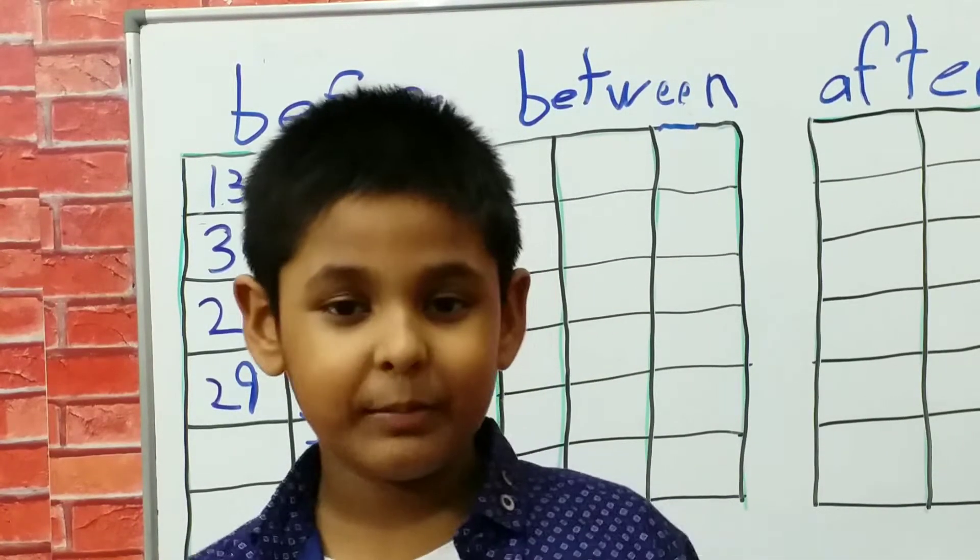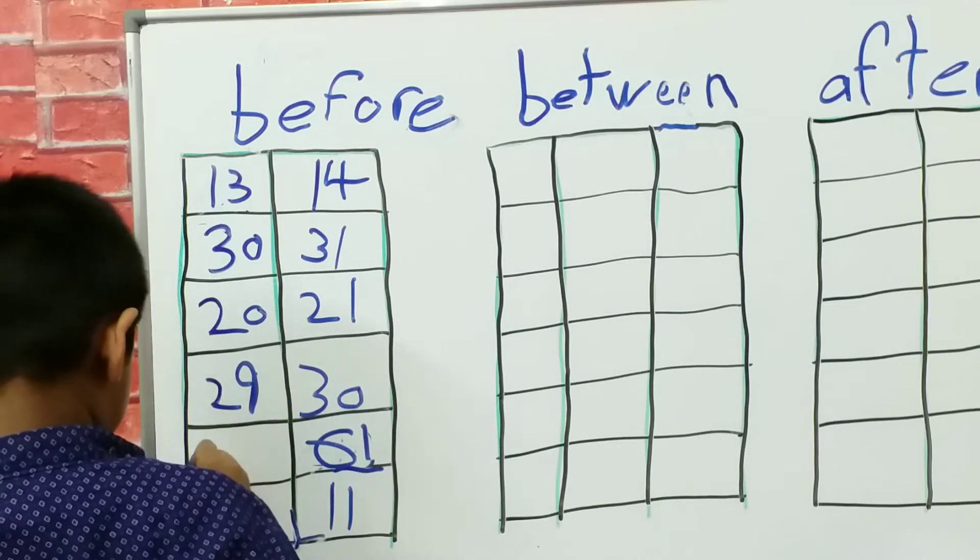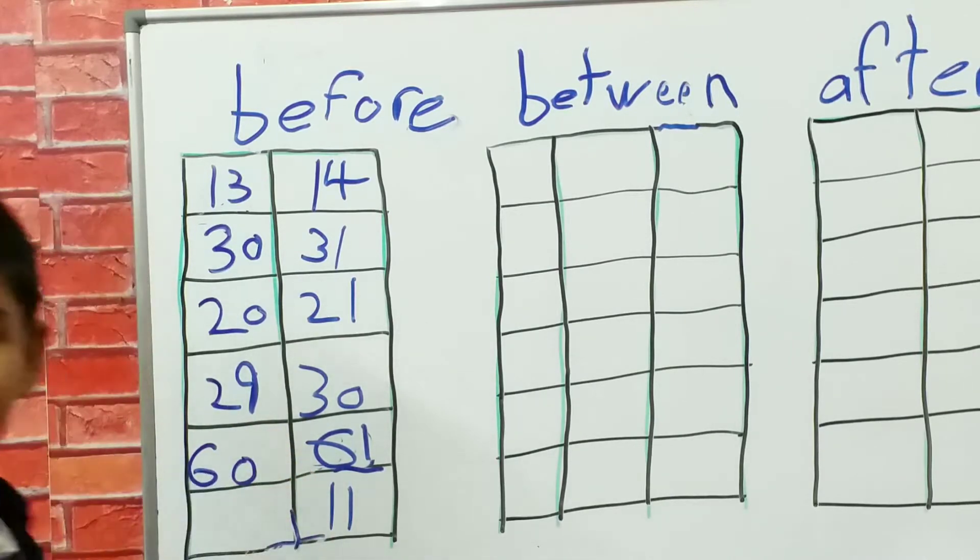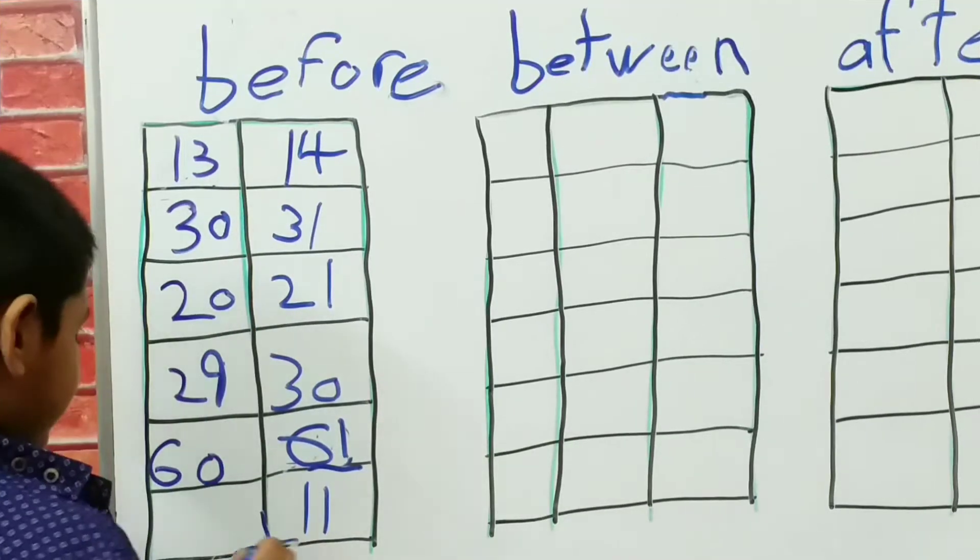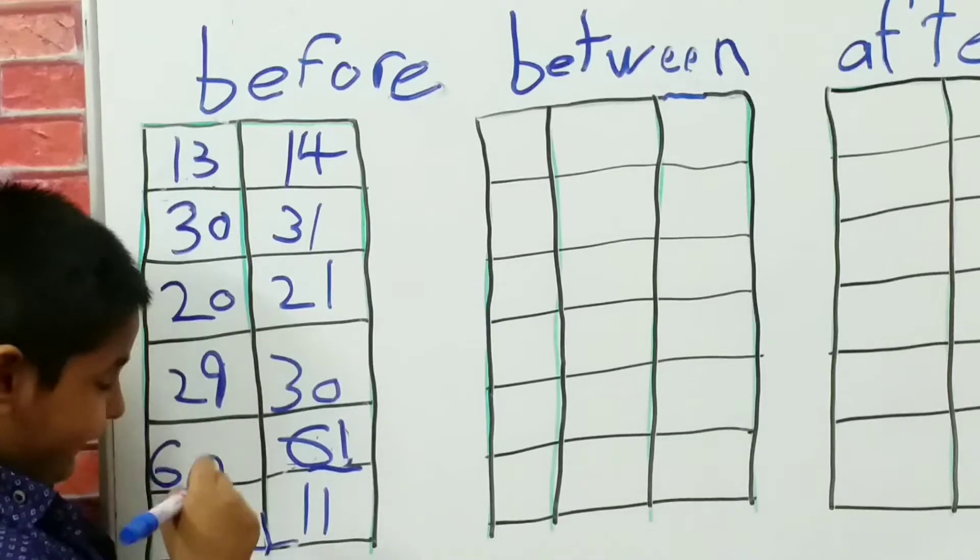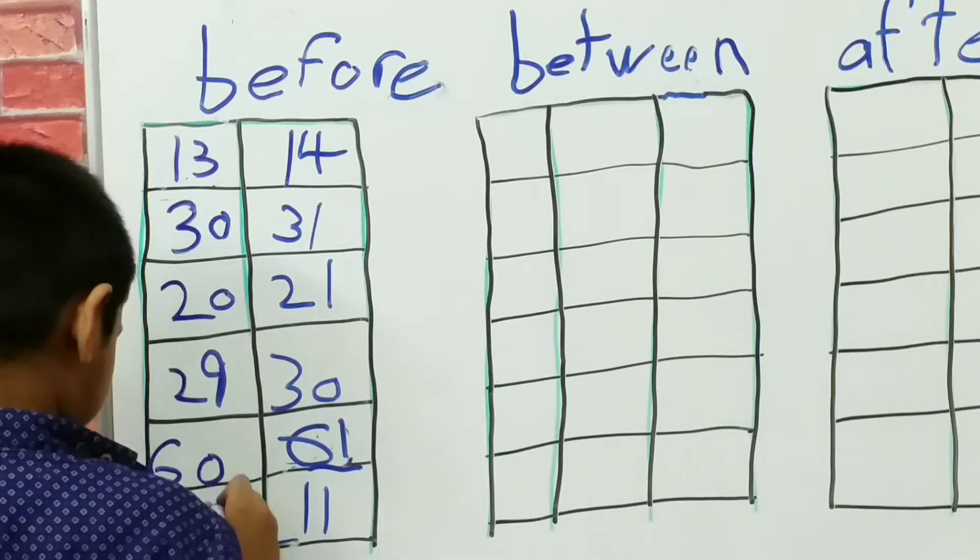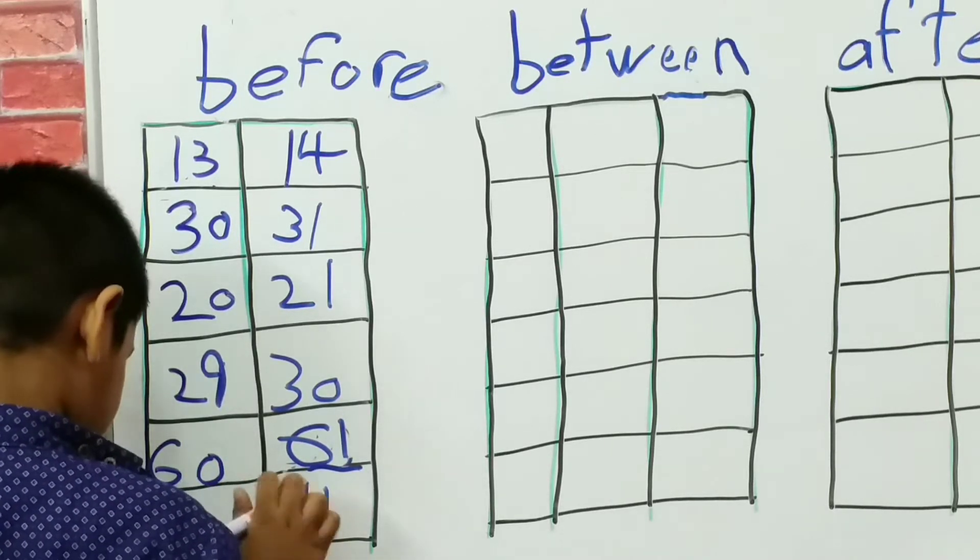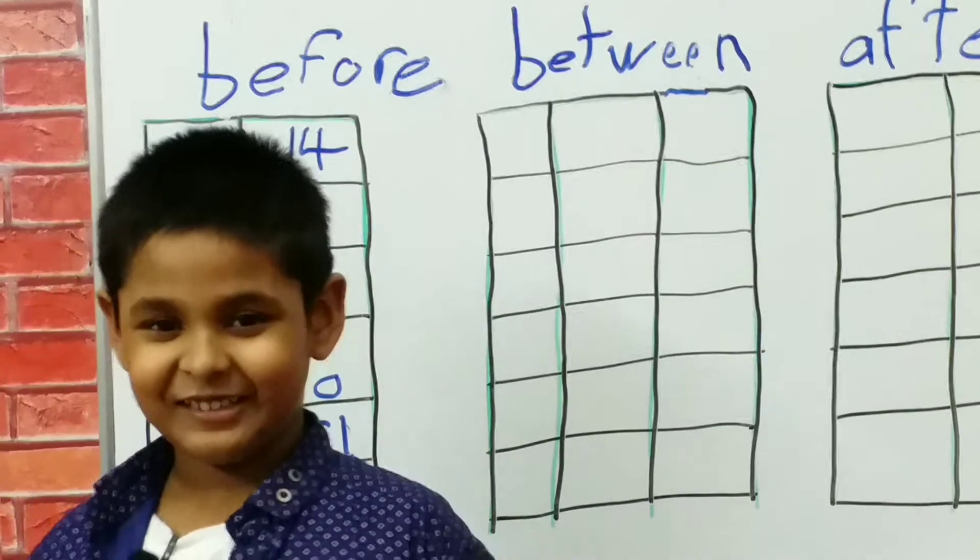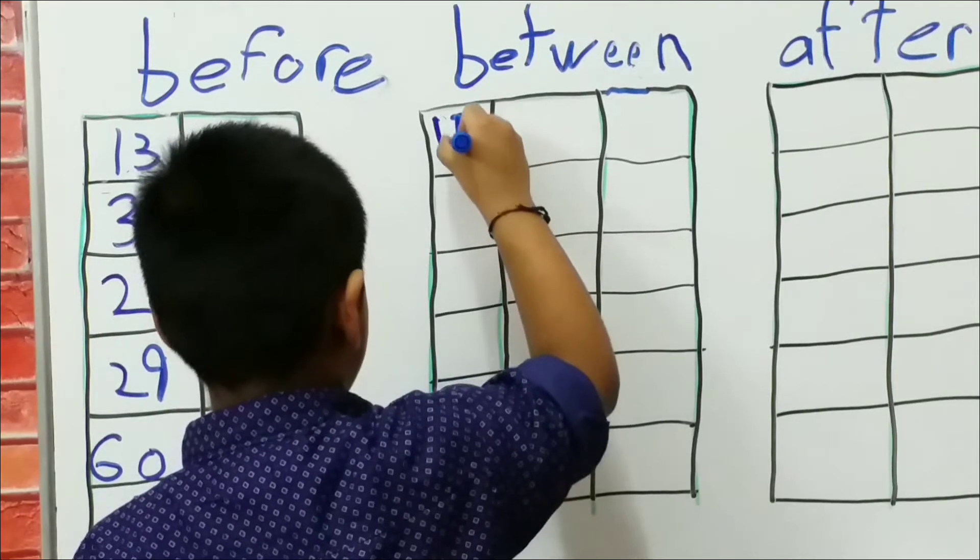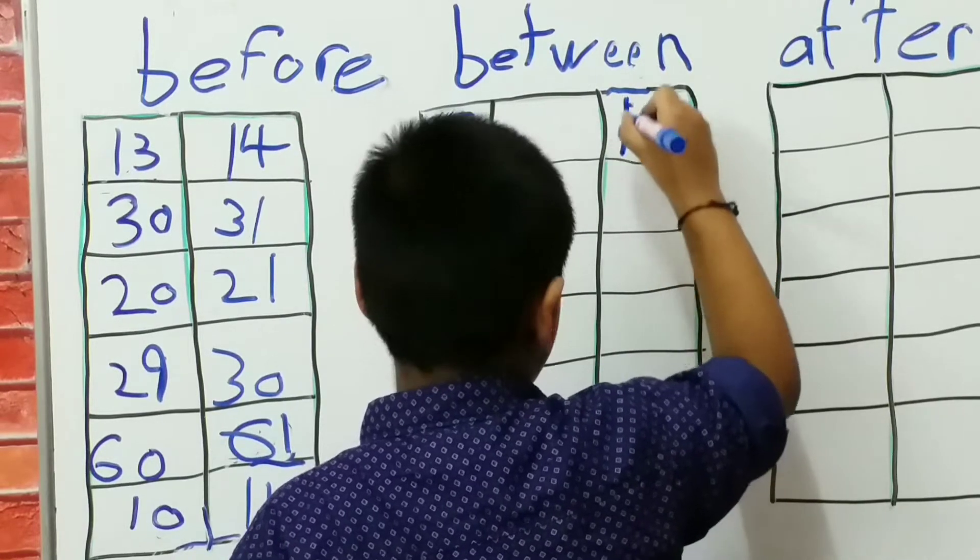So now is 30. Now is 30, before is 29. 2 9. 29. 29. Now is 61, before what? 60. 6 0. Is it right or not right? Is it right? Yeah. Tell me what is this. 11 before 10. 10. Between 5, 15, 1, 7.